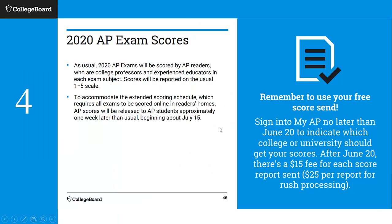Your exam scores should be done by about July 15th, give or take, and they'll be reported in the normal one-through-five scale. Don't forget you have a free score send for each AP test — do that by logging into MyAP by June 20th. After June 20th you have to pay, and if you want it rushed, you pay more. So use that free one properly.